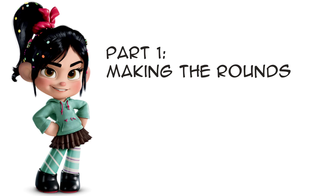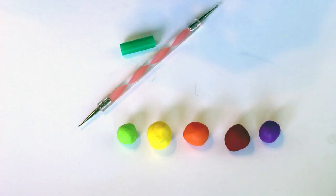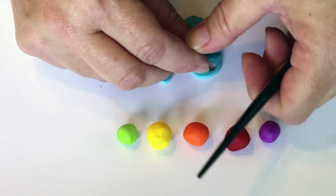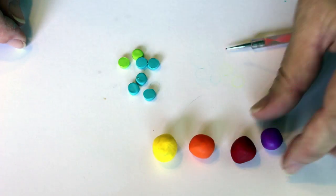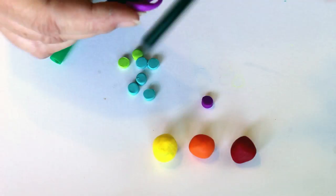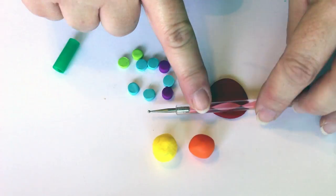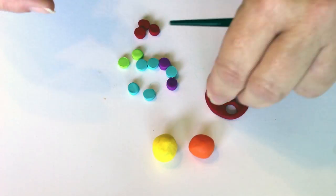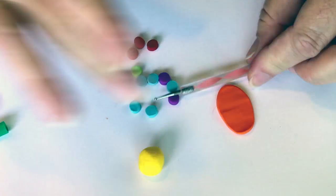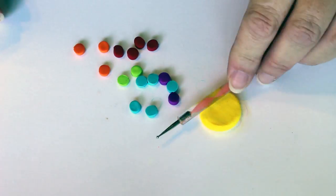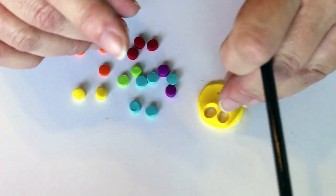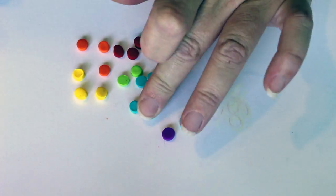Part 1: Making the Rounds. I rolled out small pieces of aqua, green, yellow, orange, red and magenta clay and created small flat round candy using a piece of plastic straw. Once all of the pieces were stamped out, I flattened each one slightly before baking according to package instructions.